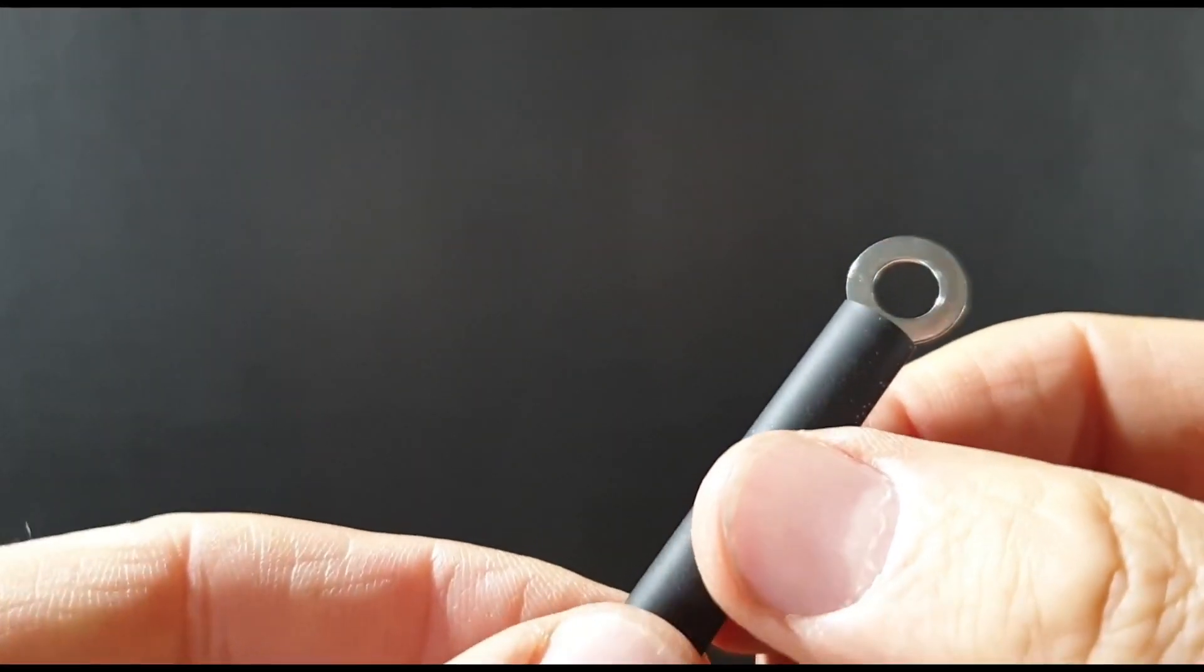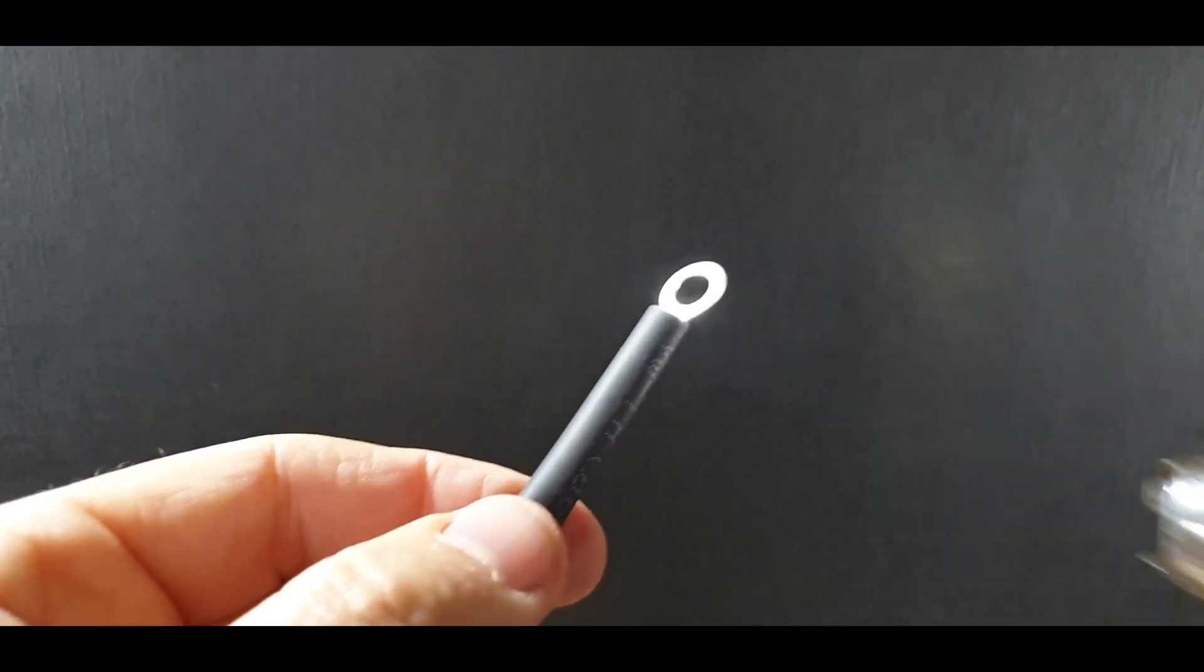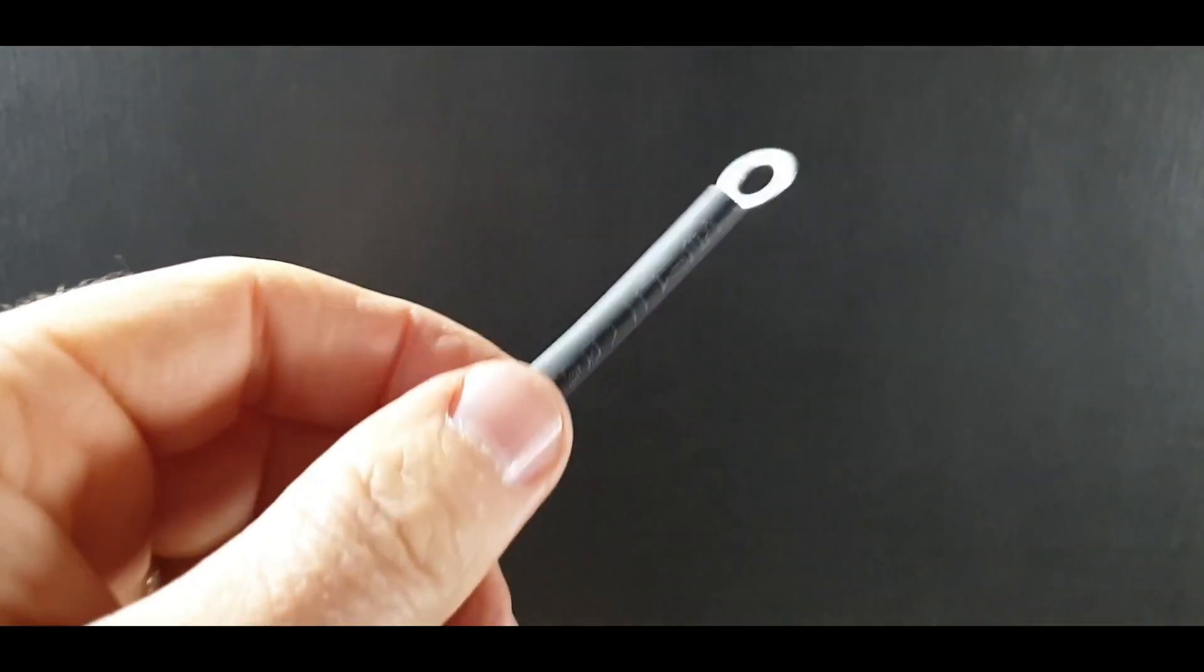So we'll shrink that down now. Use a heat gun. You can use the tip of a soldering iron, but don't be tempted to use a lighter—that can make a horrible mess.